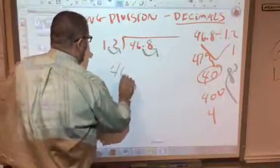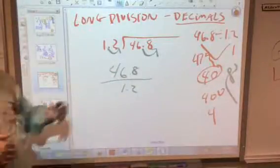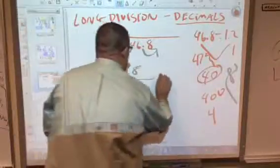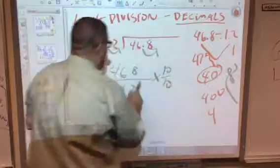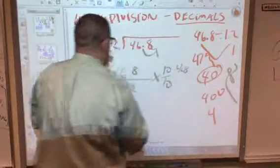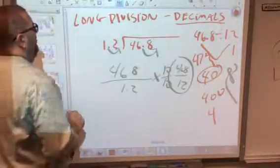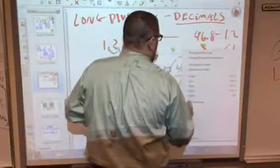Now the important part I tell the kids is I want them to understand what we're really doing here. You've got 46.8 divided by 1.2. Now it's like a fraction. You can't have a decimal in a fraction. So in order to eliminate that, we multiply by 10 over 10. So 46.8 times 10 is 468, 1.2 times 10 is 12. That's basically what we're doing, we're making that new problem for us.